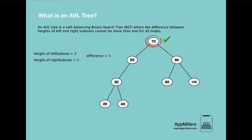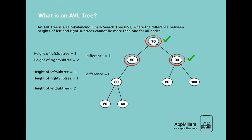Continuing to the next node — node 90 — the height of the left subtree is 1 and the height of the right subtree is 1, and the difference between them is 0, so this node is balanced. Moving to the next node, the left subtree's height is 2 and the right subtree's height is 0, and the difference between them is 2. This means that this node is not balanced.